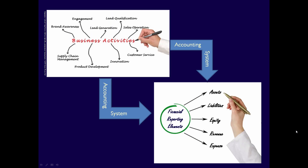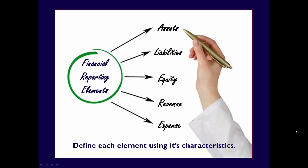What are the financial reporting elements we use to group business activities? There are five elements: assets, liabilities, equity, revenue, and expenses. Each element has characteristics that define them. When we record the activities of a business, we use those characteristics to determine if the transaction will affect the element or not.